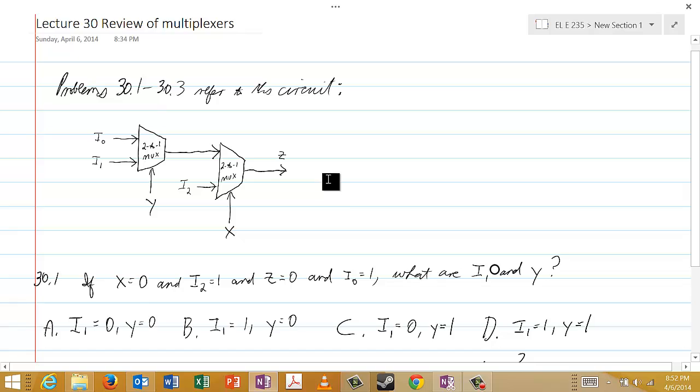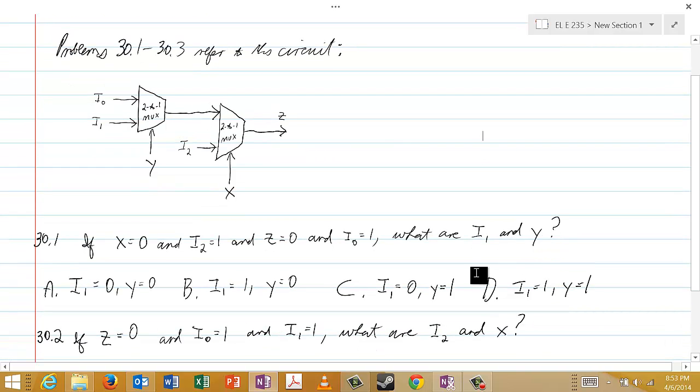And so the two questions are really very simple. The first one says, if X is equal to 0, and I2 is equal to 1, and Z is equal to 0, and I0 is equal to 1, what are I1 and Y? And you have the choices: I1 is 0 and Y is 0, I1 is 1 and Y is 0, I1 is 0 and Y is 1, or I1 is 1 and Y is 1.